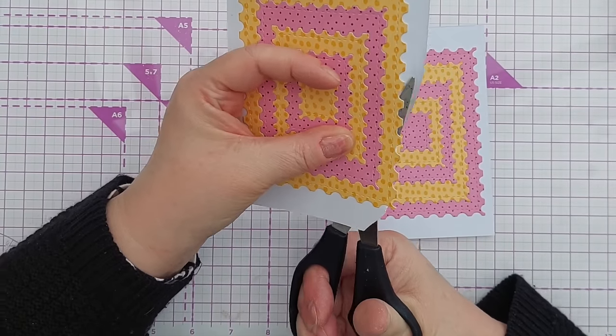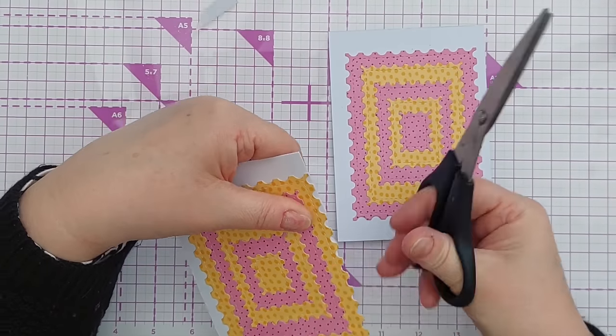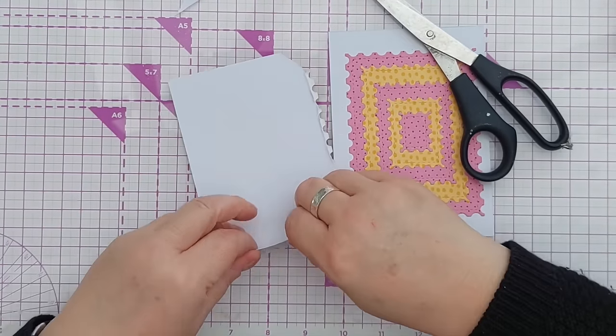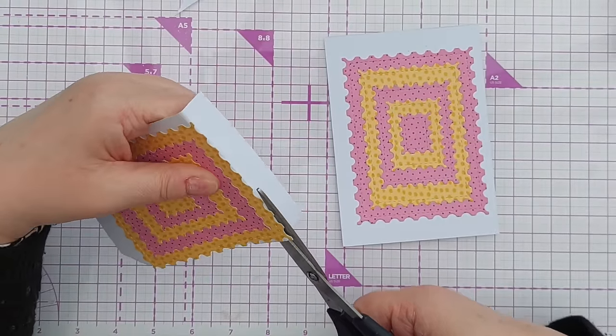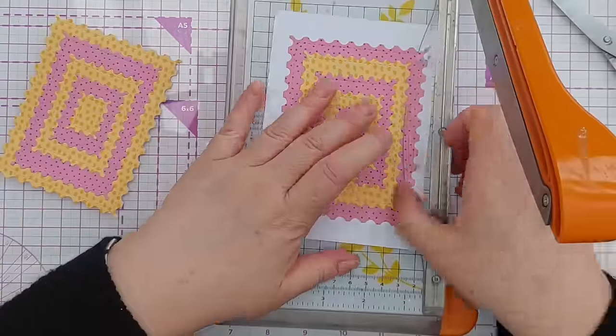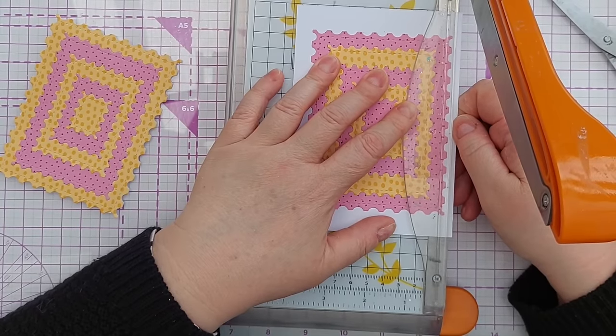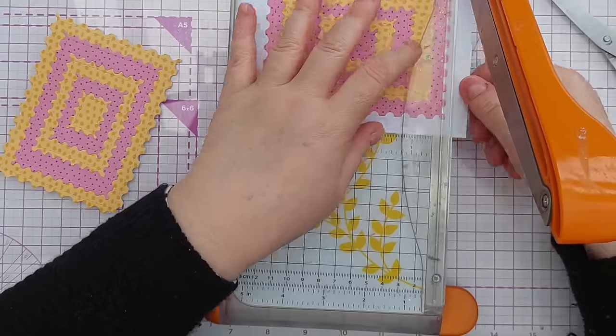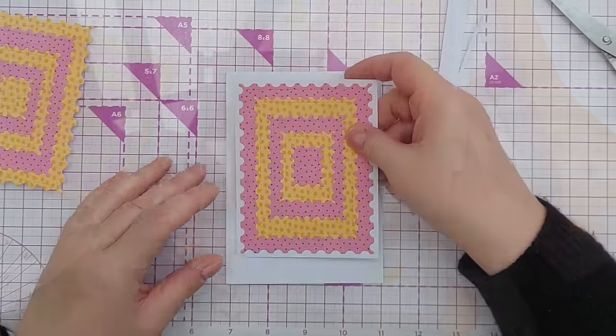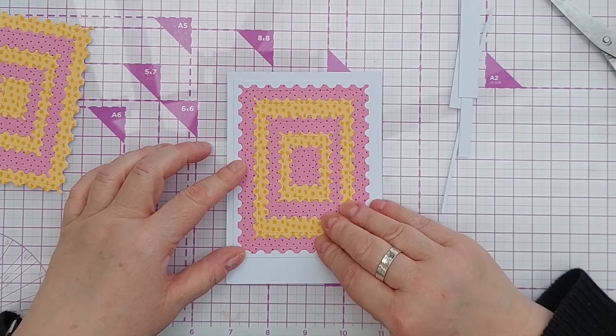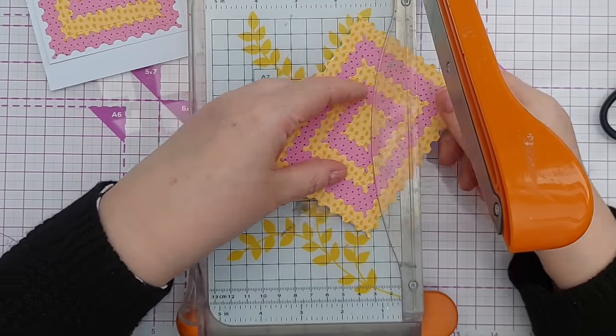Because I didn't take the sticky all the way to the edge I can actually fold back and cut along there. Or if you want the frame to have a little border you can always trim it down using a trimmer or a guillotine. So that could sit nicely on the front of a card with a focal point, with a sentiment or a flower or a butterfly or something.